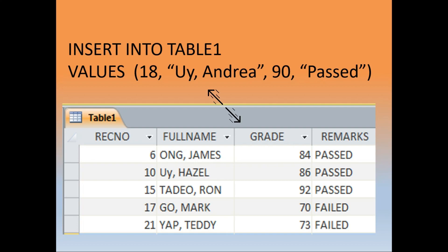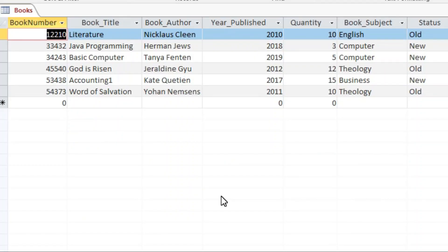First, the number of values must match the number of field names — if you have four field names, you are expected to have four values. From our example we have four different values: 18, UI Andrea, 90, and Pass. Second, we have to consider the data type of each field name. For the first field name the data type is Number, so we give a number. The second is Text, the third is Number, the fourth is Text. To differentiate text from number: if the data type is Number, just write the number; if it is Text, you must use double quotes.